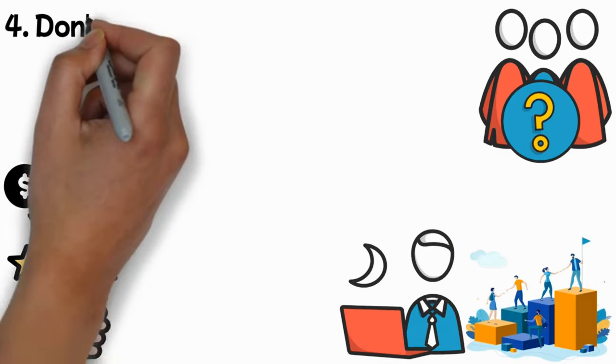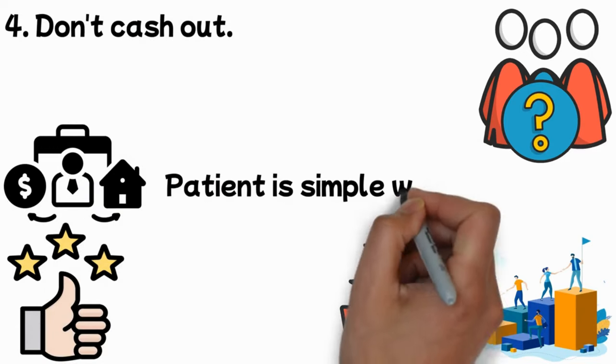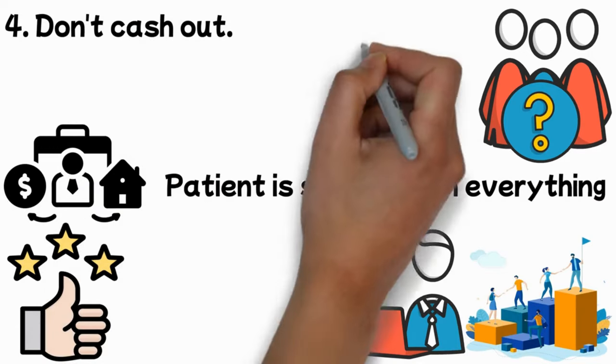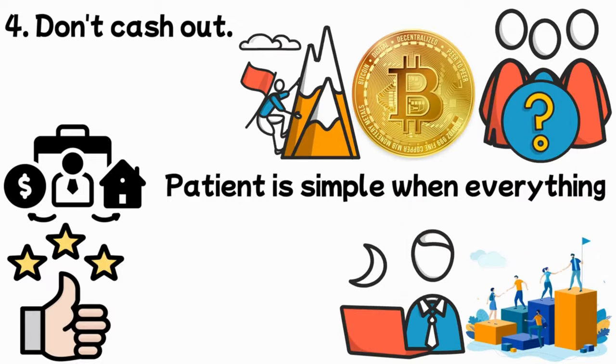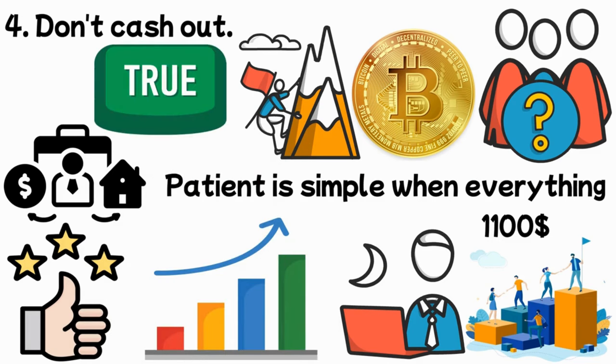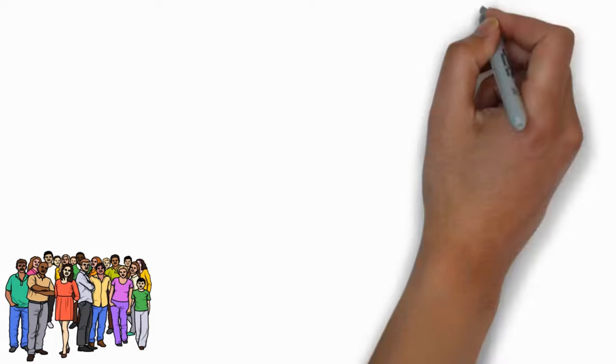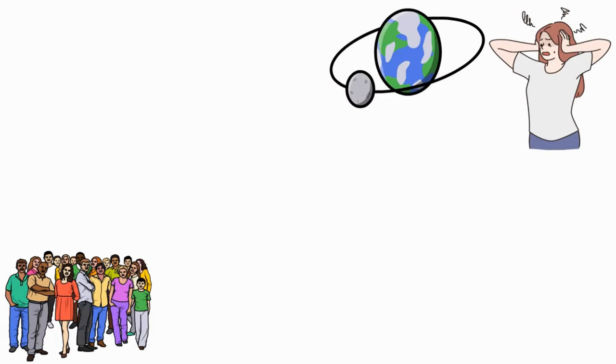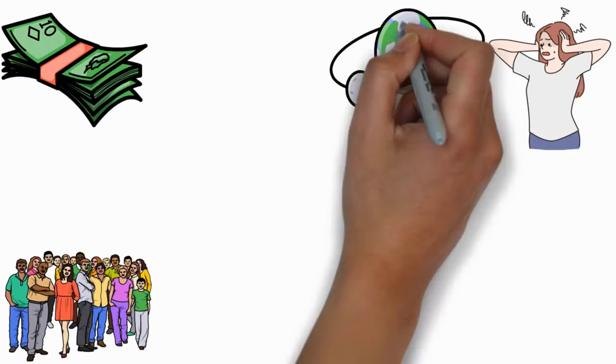Don't cash out. Being patient is simple when everything is expanding. If you bought Bitcoin before its meteoric climb to $60,000, you would have seen firsthand how quickly your assets can increase in value. The truth is that in a bear market, the exact reverse occurs. Many individuals lose patience and give up, believing that the end of the world is near. You don't need that money if the end of the world is near.